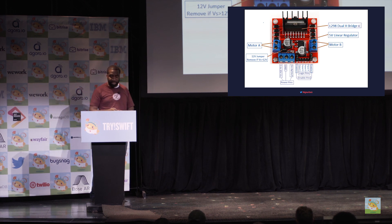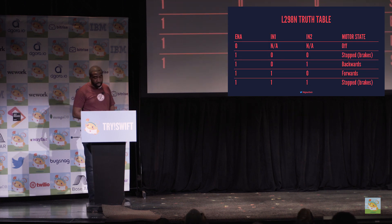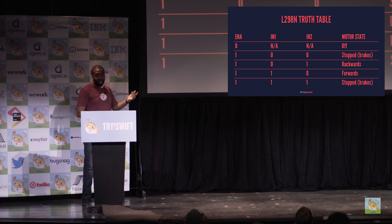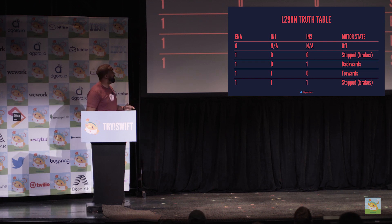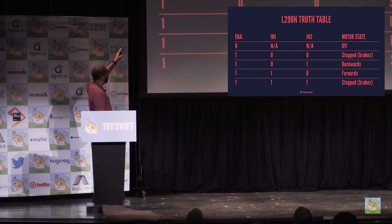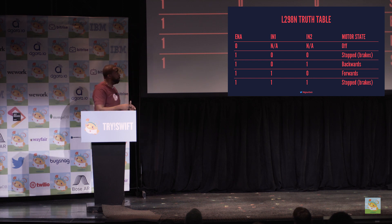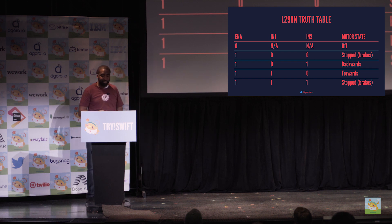Let's take a look at the truth table for the L298N. When the enable switch, ENA, is off, regardless of the values of input 1 and input 2, the motor is always off. Once ENA is on, based on providing either 0/0, 0/1, 1/0, or 1/1, you get various states for the motor — you can stop it, go backwards, go forwards, or stop it again. Relatively simple.